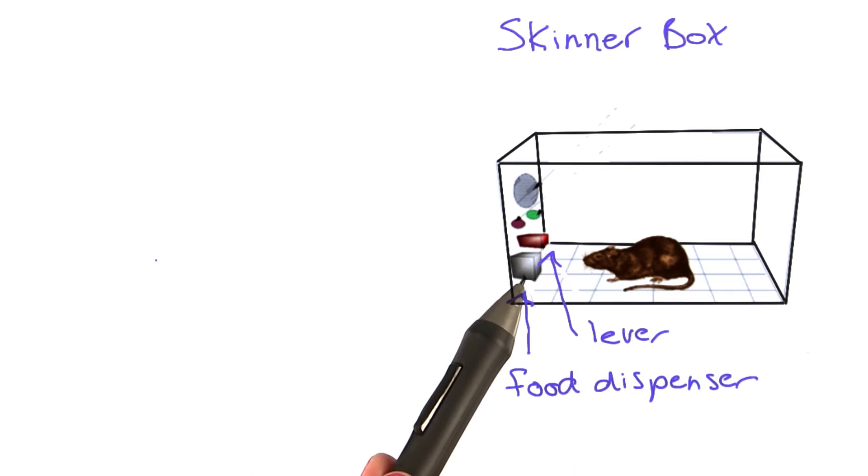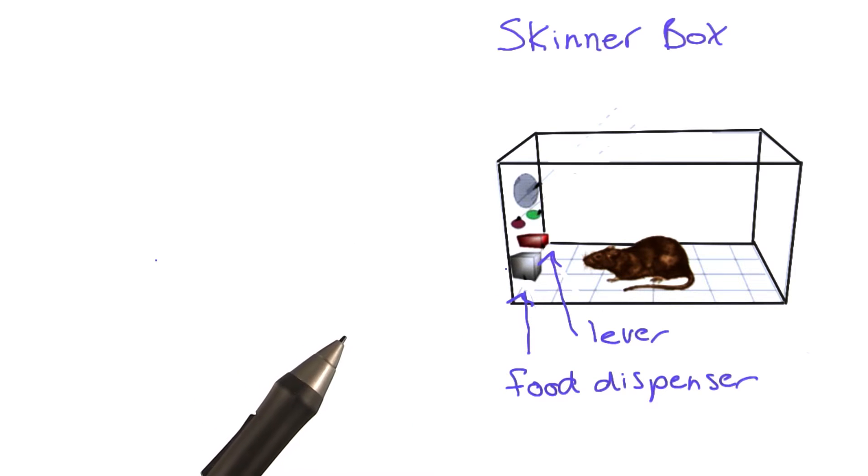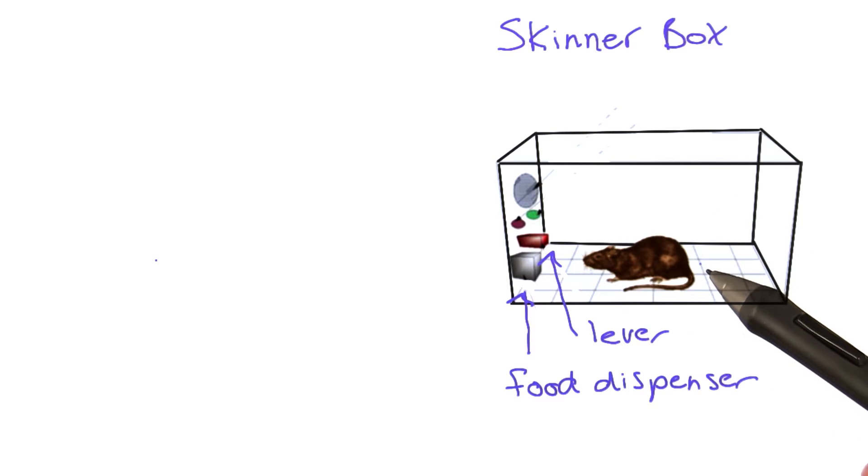You might wonder, why did Skinner look at rats and pigeons in a Skinner box? It turns out that what he learned from the Skinner box can be applied to humans, meaning the information from the animals generalizes to human behavior as well.